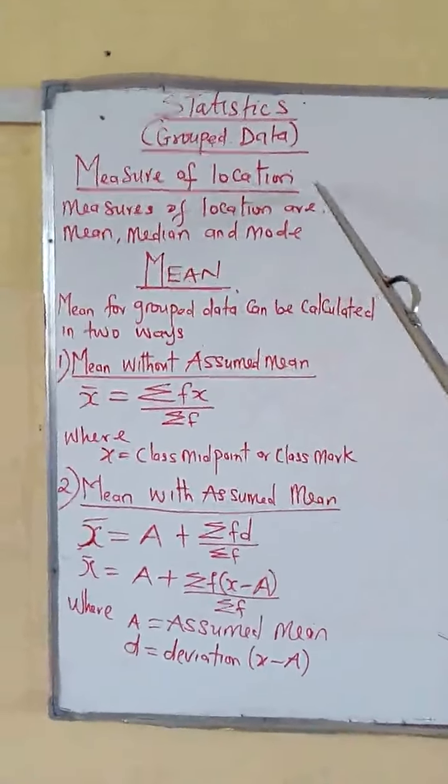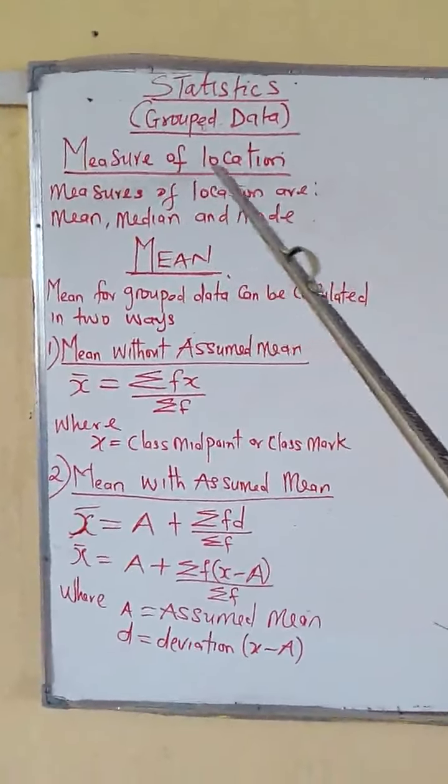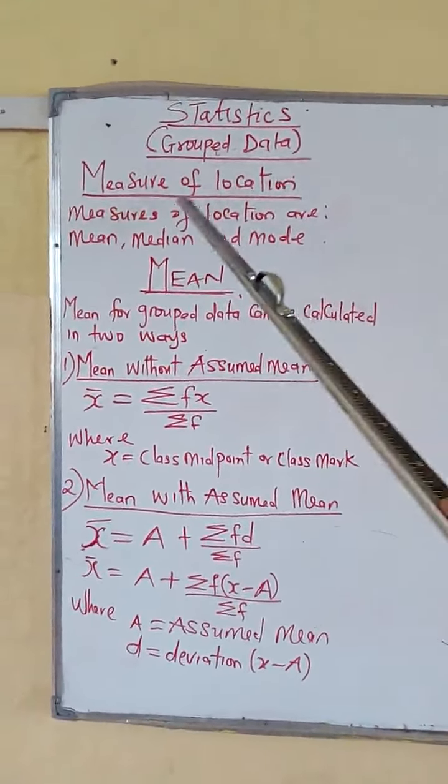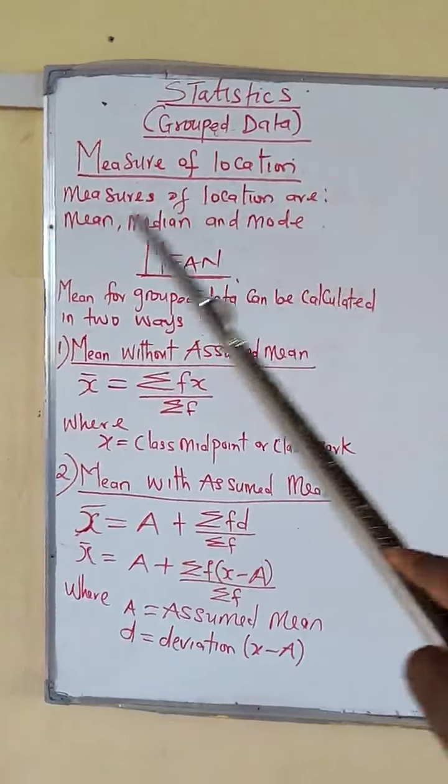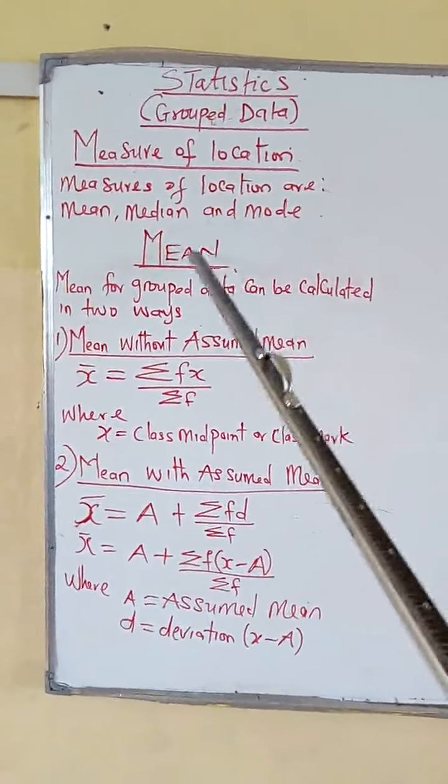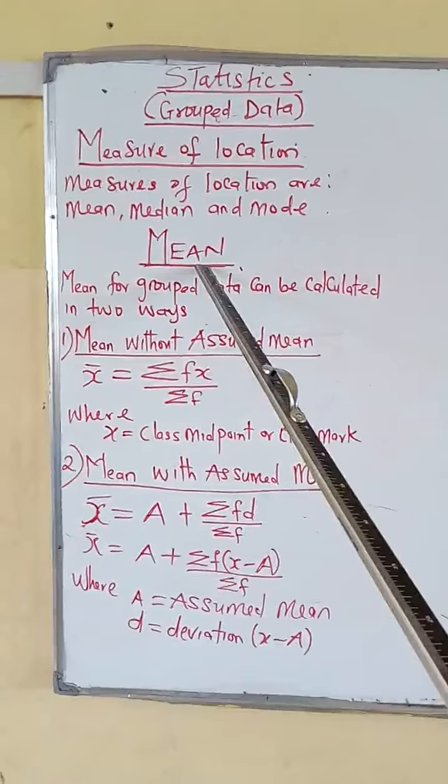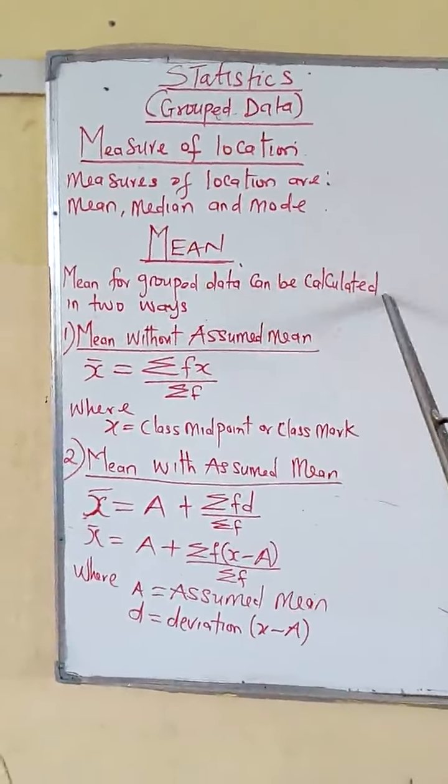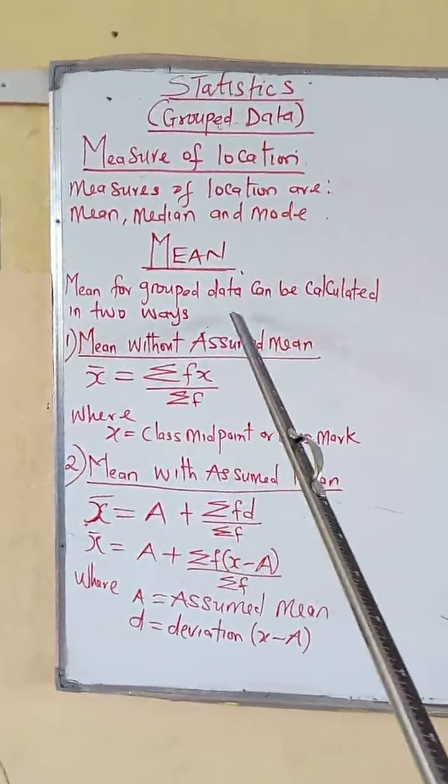Okay, we are going to look at measure of location for grouped data. Measures of location are mean, median, and mode. We start with the first one: mean. Mean for grouped data can be calculated in two ways.